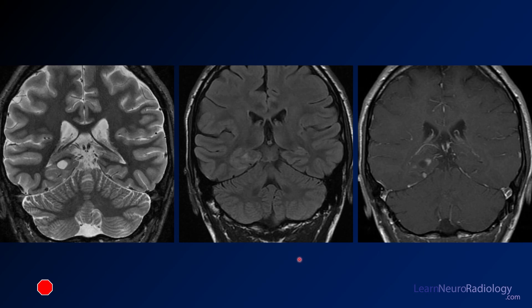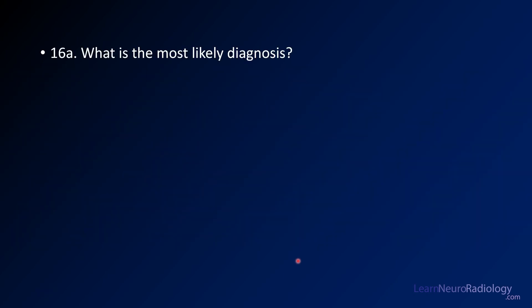By now you should have a pretty good idea of where the lesion is and a pretty good idea of your differential diagnosis. Your first question is: what is your most likely diagnosis? You'll probably get a multiple choice question with four to ten diagnoses and you just have to choose.